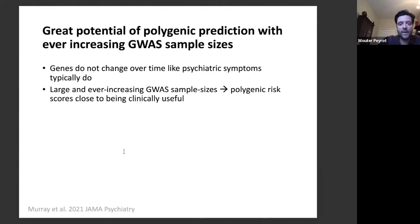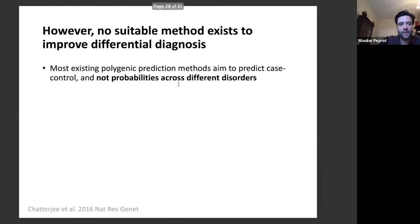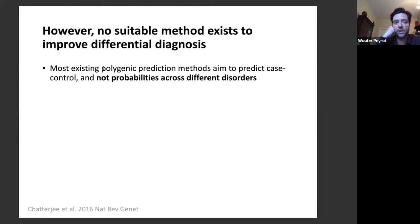There is great potential for polygenic prediction with constantly increasing GWAS sample sizes. However, there is no suitable method yet that distinguishes different disorders — most existing methods aim to predict case-control status rather than probabilities across different disorders.